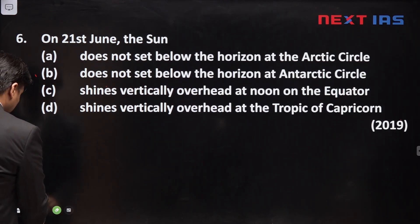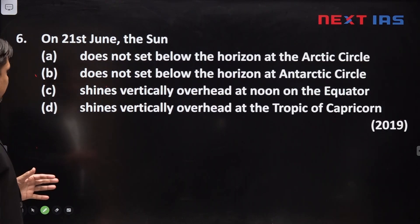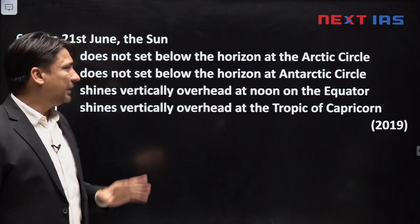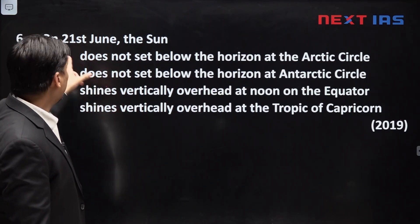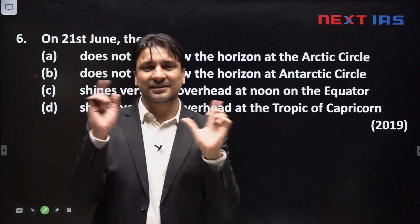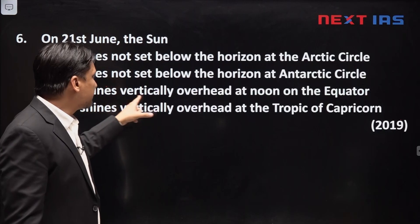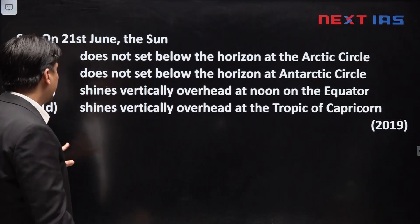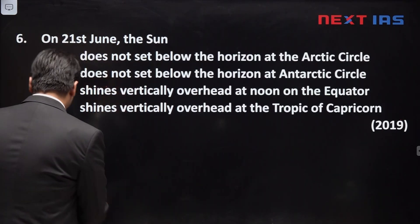The next question is again about the apparent movement of the sun. On 21st June: (A) the sun does not set below the horizon at the Arctic Circle; (B) it does not set below the horizon at the Antarctic Circle; (C) the sun shines vertically overhead at noon on the equator; (D) the sun shines vertically overhead at the Tropic of Capricorn. Let me explain through a diagram.